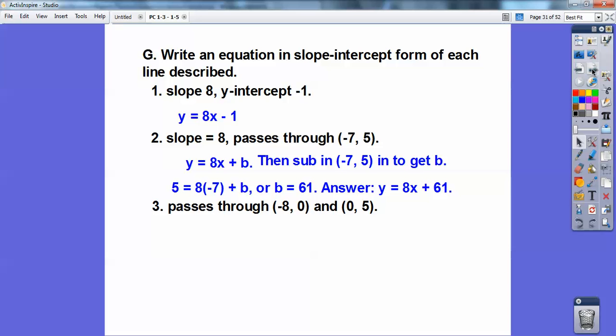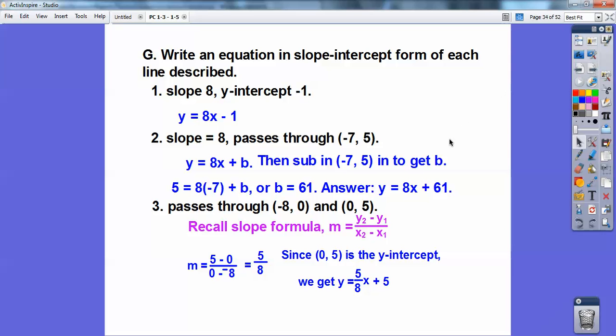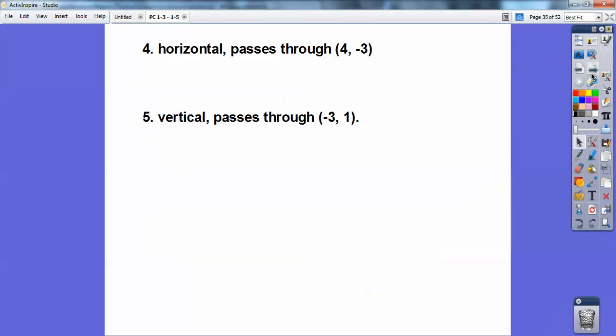It passes through these two points. This is the y-intercept right here, so I don't need to do any substitution. Once I get the slope, there's the y-intercept. It's 5. Zero comma anything is always my y-intercept. Remember the slope formula? Y sub 2 minus y sub 1 over x sub 2 minus x sub 1. So I get 5 eighths. So y = 5/8 x + 5.